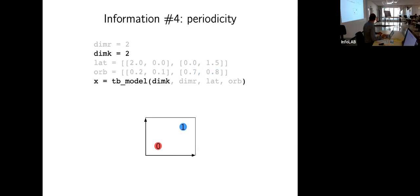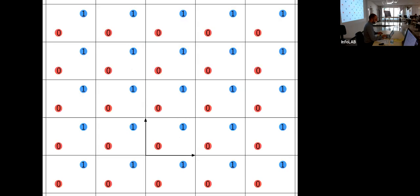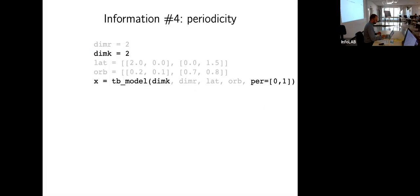The fourth piece of information you need is the periodicity. You specify everything in the unit cell, then say whether your model is periodic. If you specify periodicity as 2, that means the unit cell is infinitely repeated in all directions. Another way to specify the same thing is to say periodic directions are 0 and 1, meaning both the first and second lattice vectors are periodic.